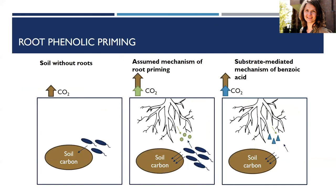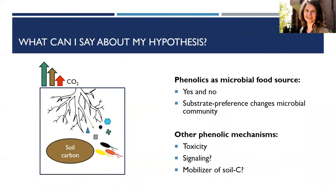So to bring it back to my overall hypothesis: are phenolics used as a microbial food source? Yes, in the case of benzoic acid; no, or to a lesser degree, in the case of catechin and caffeic acid. But the mechanism by which benzoic acid ultimately caused a change in organic matter decomposition was different — it was changing the microbial community. Other phenolic mechanisms I found some evidence for include toxicity in the case of caffeic acid and catechin, evidenced by decreased abundance. Other mechanisms remain that my results don't exclude but would need further evidence to support.